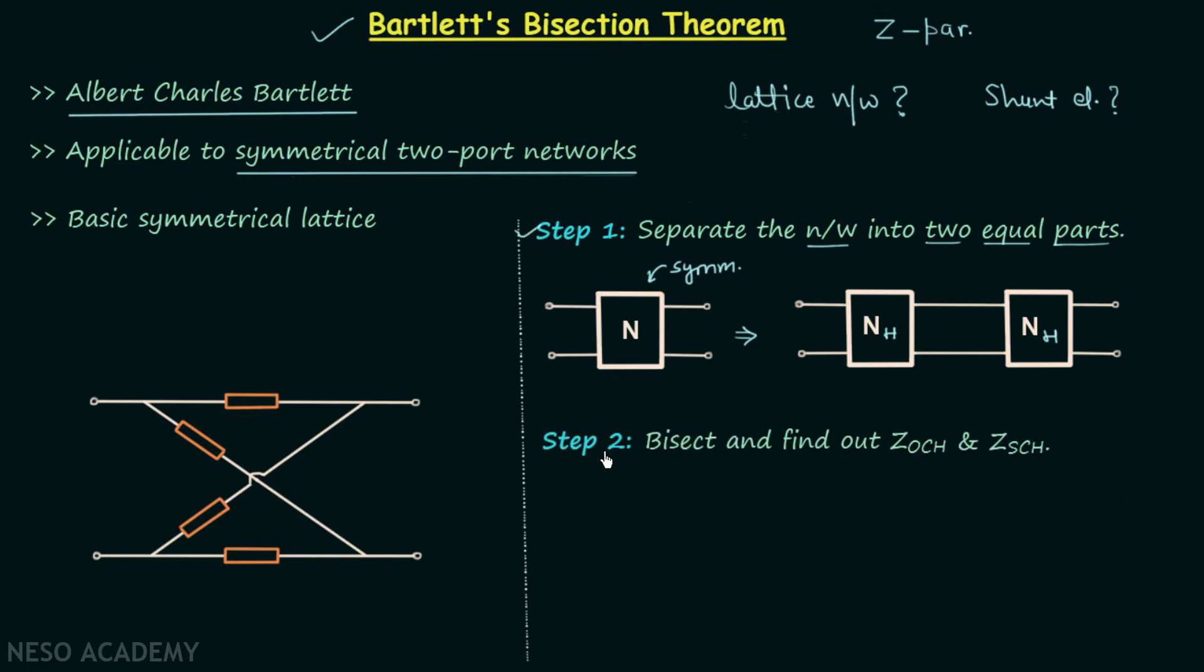Now moving to step number two, we will bisect and find out Z OCH and Z SCH. So first we bisect our network like this, then take the half network and open circuit port number two. This means current I2 equals zero, then we calculate the impedance between these two terminals. The calculated impedance is known as Z OCH.